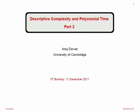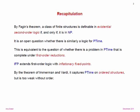Thank you for coming back for the second part. I'll start with a quick recap of what I said yesterday in one slide. We saw that Fagin's theorem, whose proof was presented, states that a class of finite structures is definable in existential second-order logic if and only if the class is in NP — decidable by a non-deterministic machine in polynomial time.